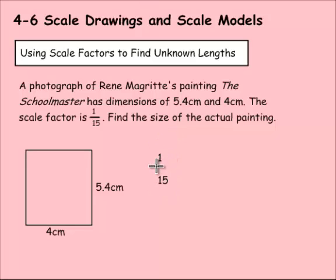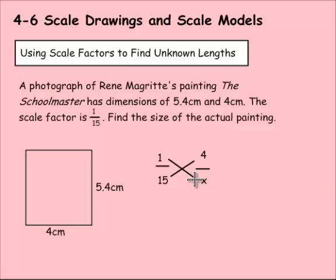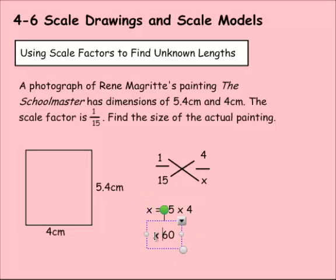So 1 represents the photo and 15 represents the actual size. The photo is 4 centimeters wide — how wide is the actual painting? We can use x to solve that. Using the scale factor 1 to 15 and setting up 4 over x, we do cross products: 1x equals 15 times 4, so x equals 60. The actual painting is 60 centimeters wide.